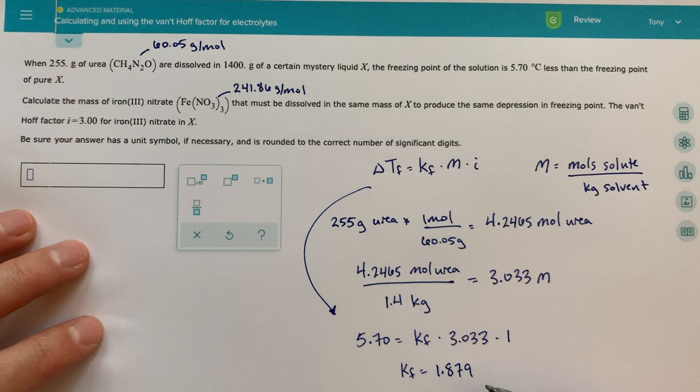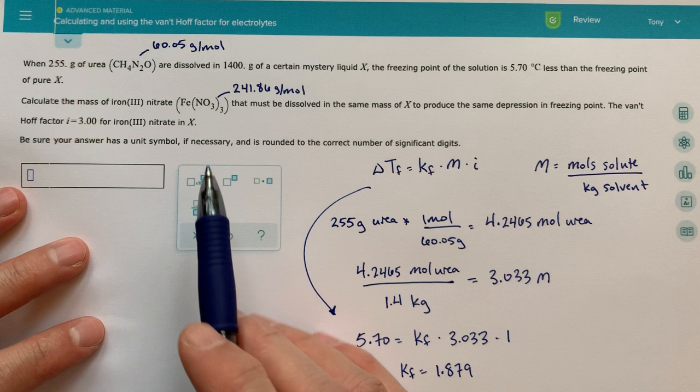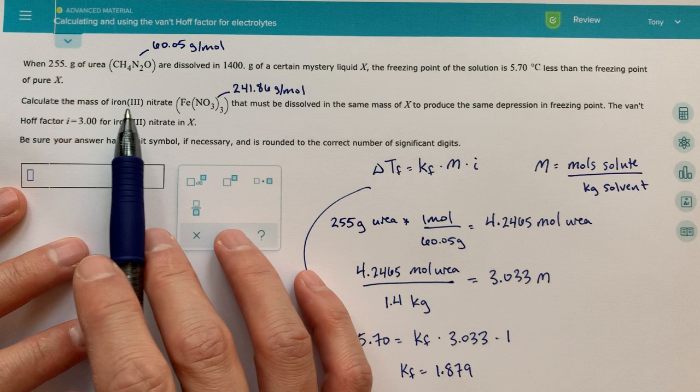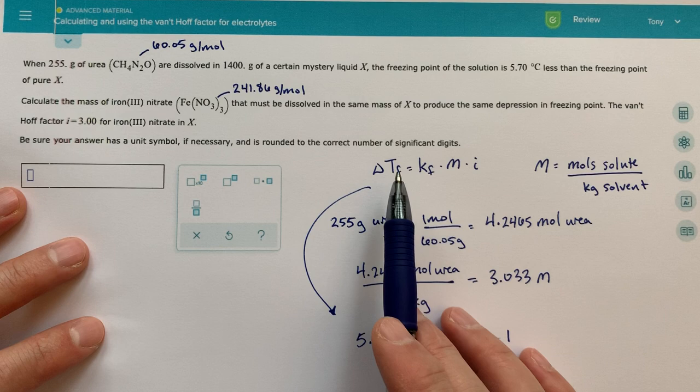Okay, so now that we have the KF for our mystery liquid, we can start figuring out the second part of this problem, essentially. And we're told that the mass of, we're looking for the mass of iron nitrate. So we don't know, that's basically going to tell us that we don't know what the molality is.